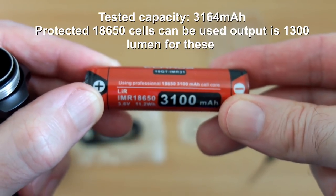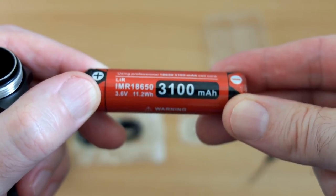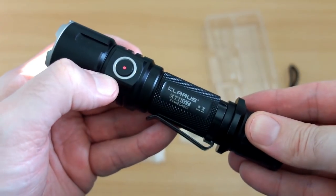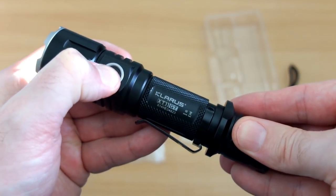This is unprotected but you can use protected cells, but the output will drop down. They happen to use an unprotected IMR cell for the maximum 2,000 lumens. Here you can see the power level indicator.